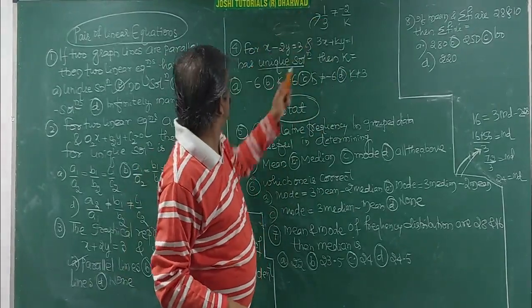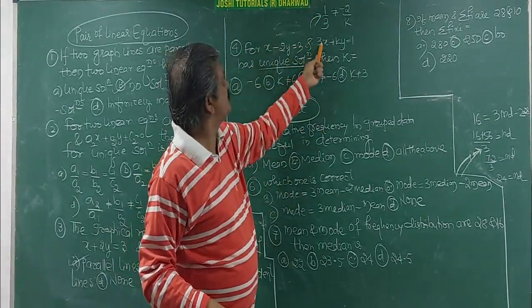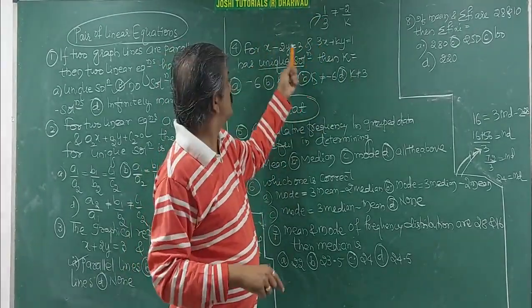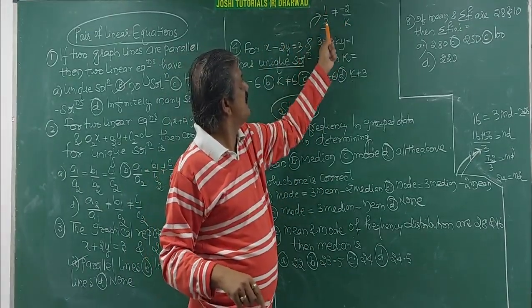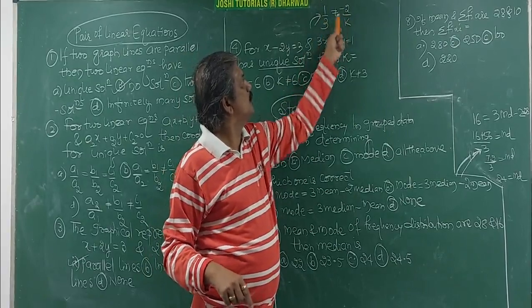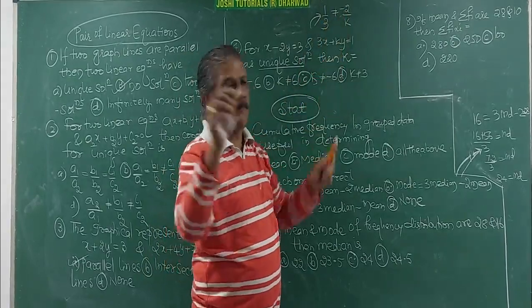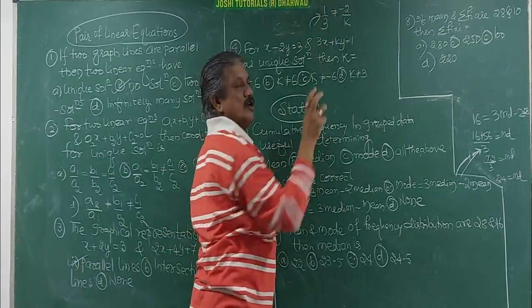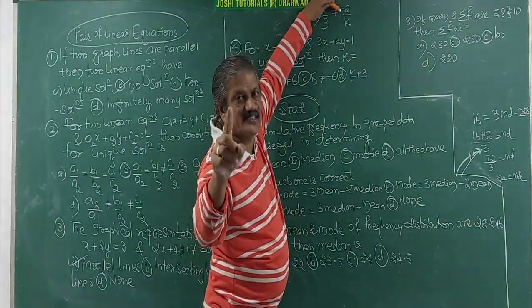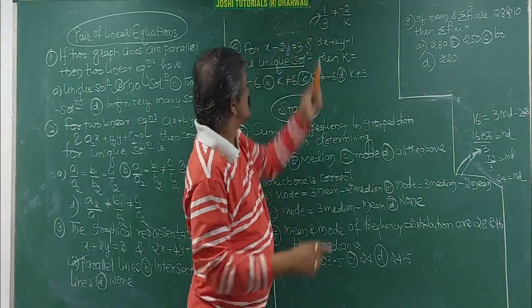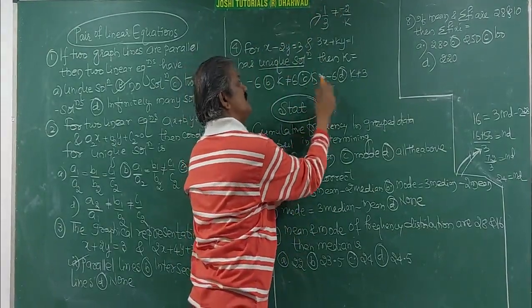A1 by A2, that is 1 by 3, is not equal to minus 2 by K. K shifts here and 3 here. So K is not equal to 3 into minus 2 is minus 6. This is how you can understand. 3 into minus 2 minus 6. K comes here. So K is not equal to minus 6.